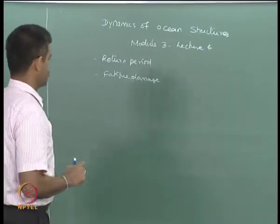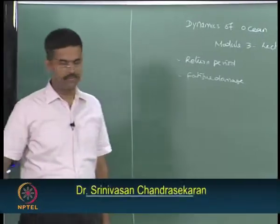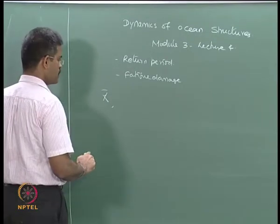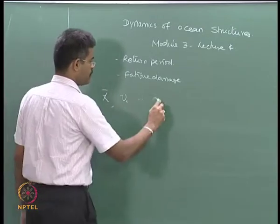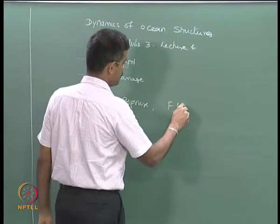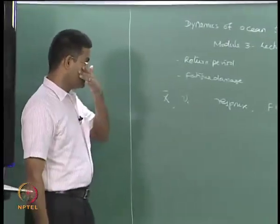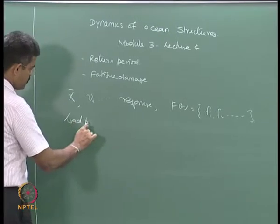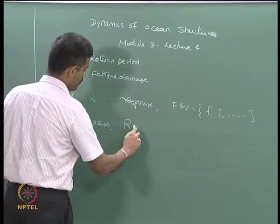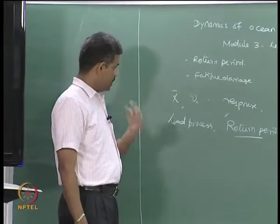Looking into the stochastic content of dynamic analysis, we have already seen how the stationary process can be used to derive first-order second-moment values such as x-bar and auto-covariance function for the response, which are realizations of a stationary stochastic process f(t) with samples f1, f2, and so on. Now, there is a very important terminology associated with the load process — what we call the return period. Let us quickly see how to define and compute it for a stationary narrow-band process.